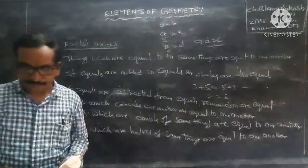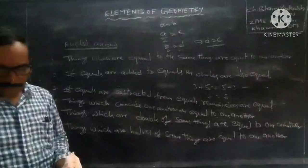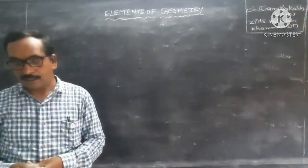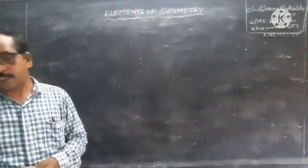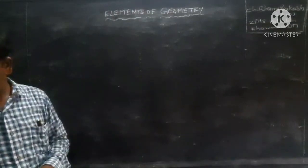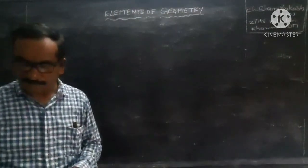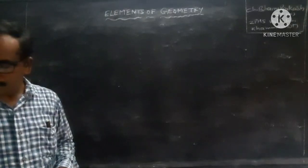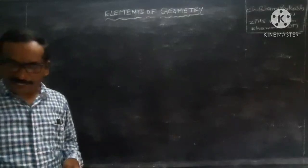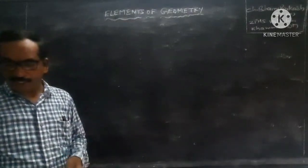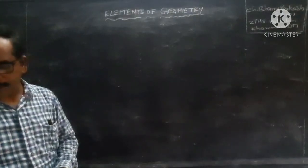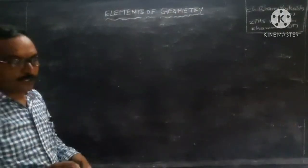These are the Euclid axioms. Now we will discuss Euclid's five postulates. First: there is a unique line that passes through any two given distinct points.